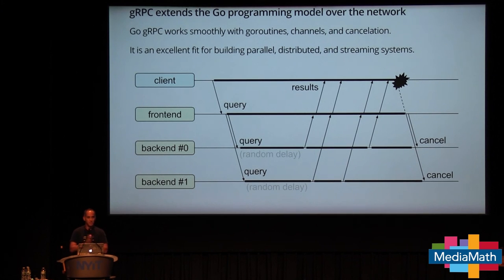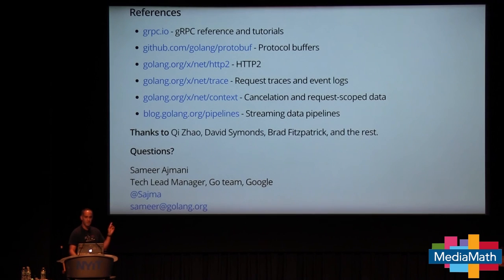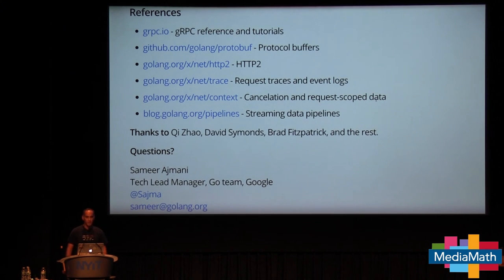GRPC extends the Go programming model over the network. This isn't netchan — we're not trying to give you a channel abstraction, but we're giving you a clean API with blocking operations and asynchronous cancellation that you can wire together with goroutines and channels in the way you normally would. It moves smoothly with goroutines, channels, and cancellation. I think it's an excellent fit for building parallel, distributed, and streaming systems. Resources: grpc.io, protocol buffers, HTTP2 by Brad Fitzpatrick, the trace package, context package, and the pipelines blog post. Special thanks to my fellow Googlers and teammates. Happy to take questions.